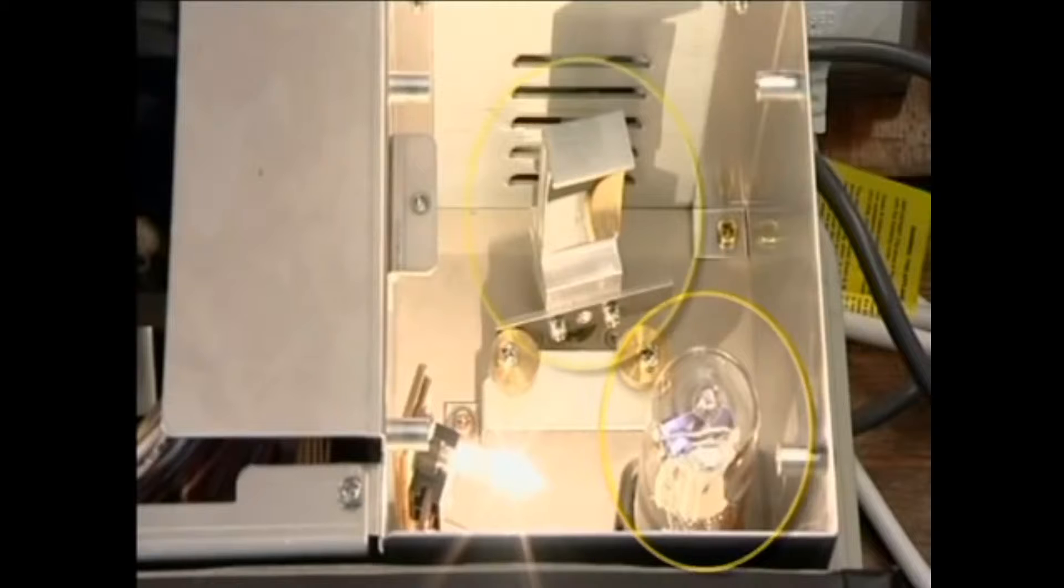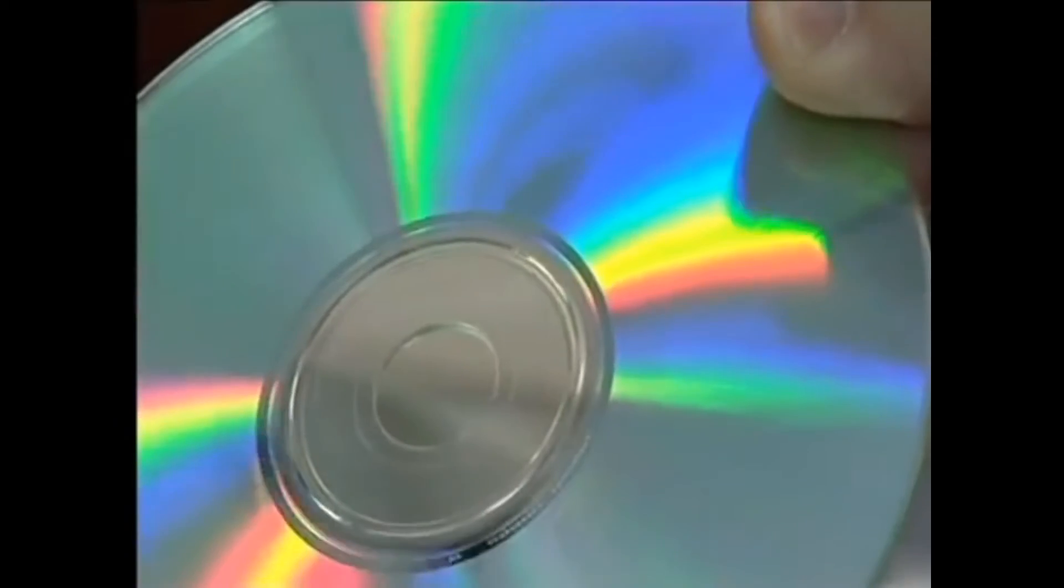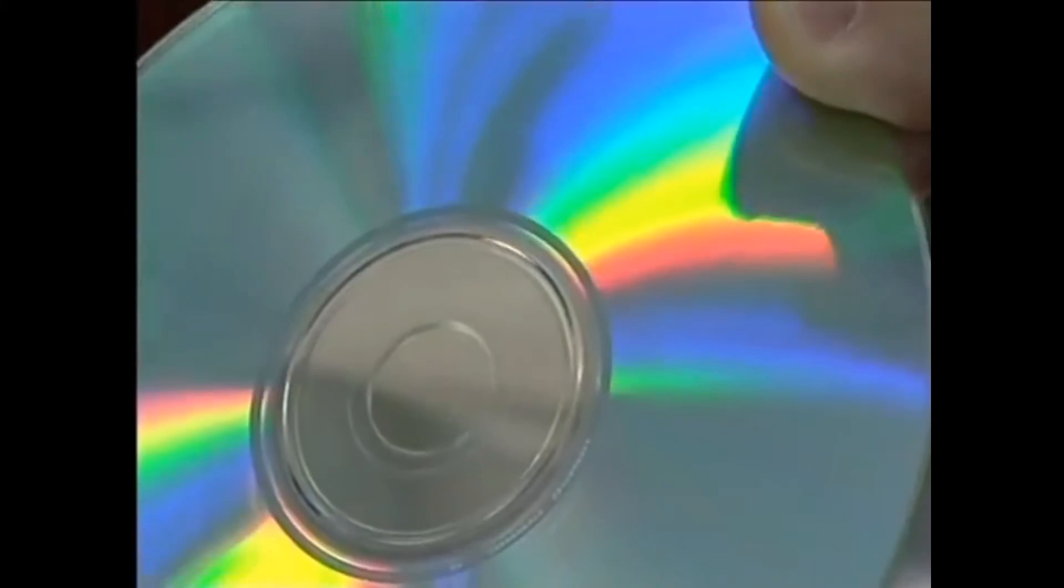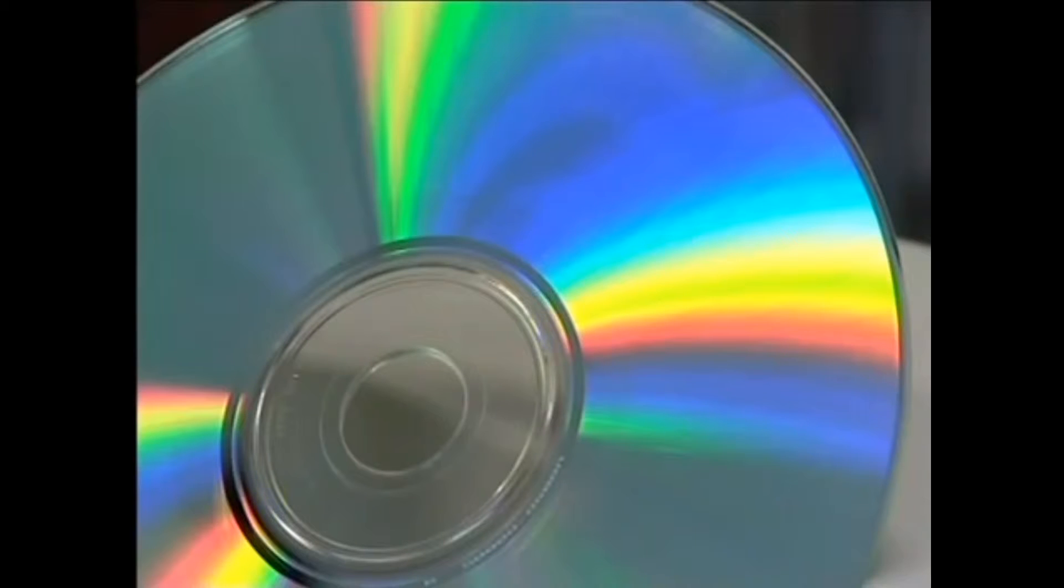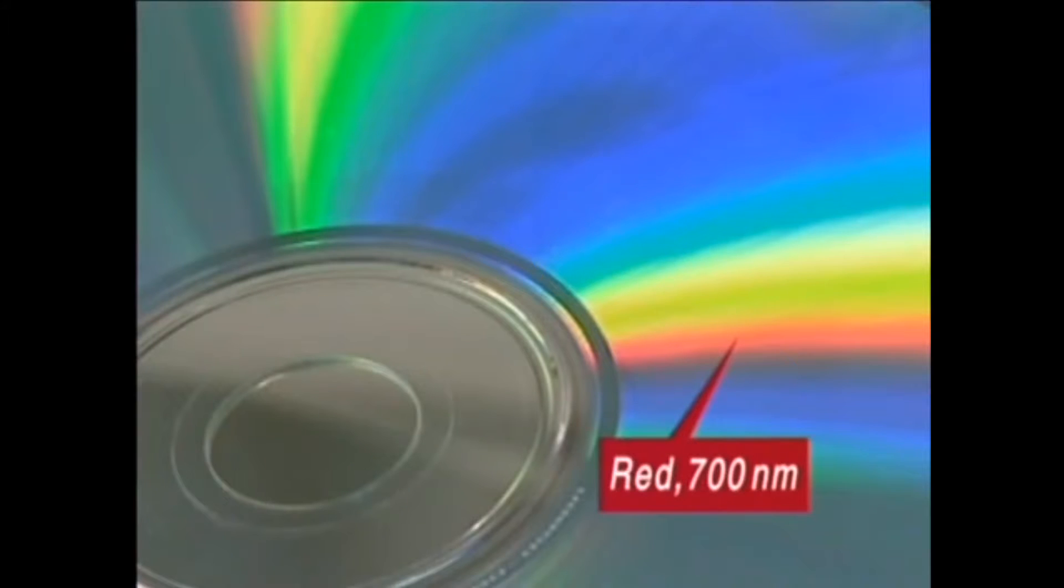This mirror directs light from the appropriate source into the monochromator, which contains a diffraction grating that acts like the playing surface of a CD to split the light into its constituent wavelengths. Different wavelengths correspond to different colours - red is about 700 nanometres and blue around 400 nanometres. Wavelengths shorter than about 350 nanometres are called ultraviolet. Shorter wavelength light has higher energy.